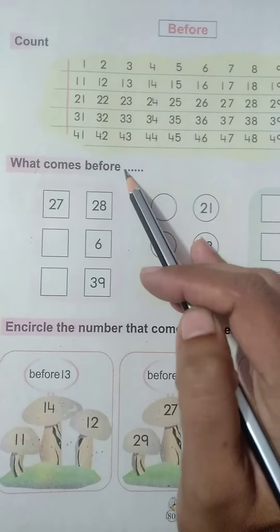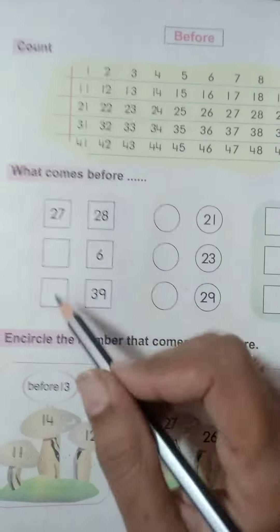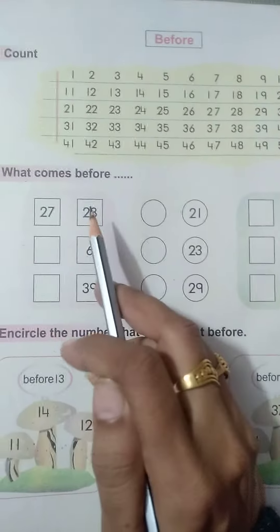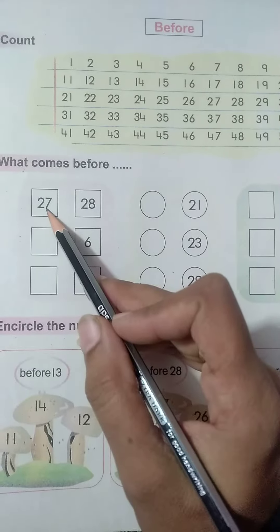Today we will learn the use of before. Now see here. Now we will learn what comes before. We have already done. But today we will do 1 to 50. Okay now see here first one is done for you.